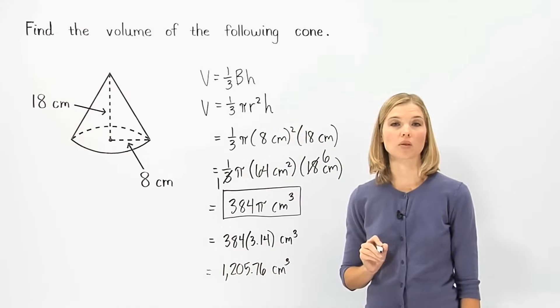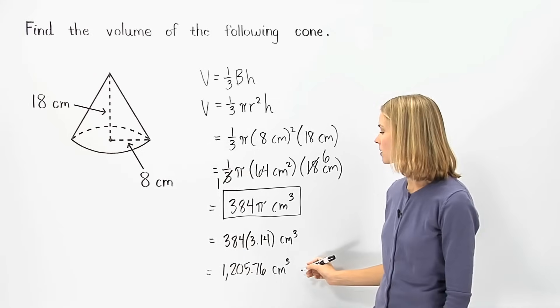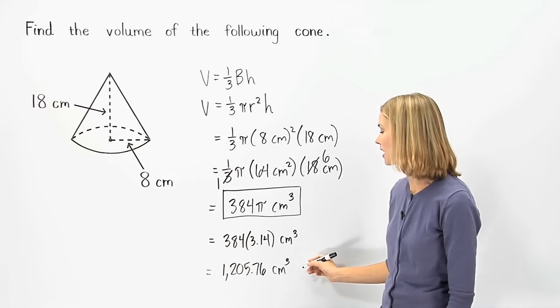So another way to write the volume of the given cone is 1205.76 cubic centimeters.